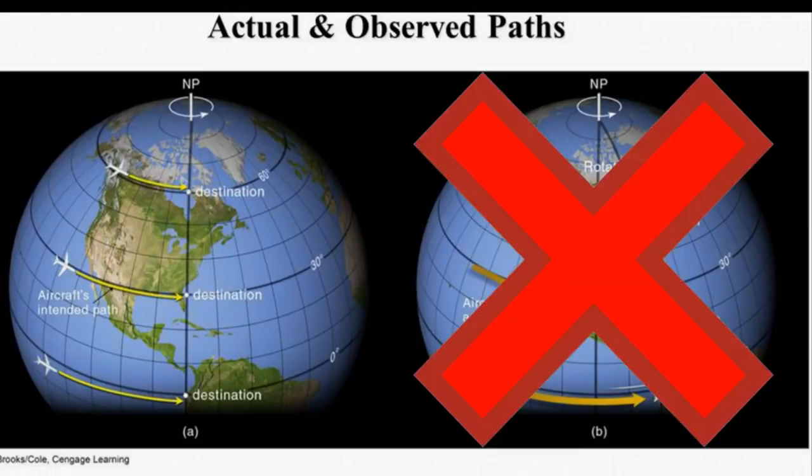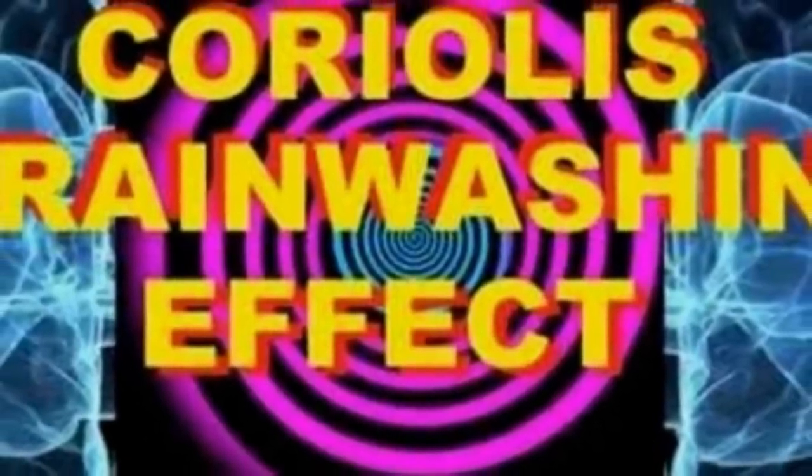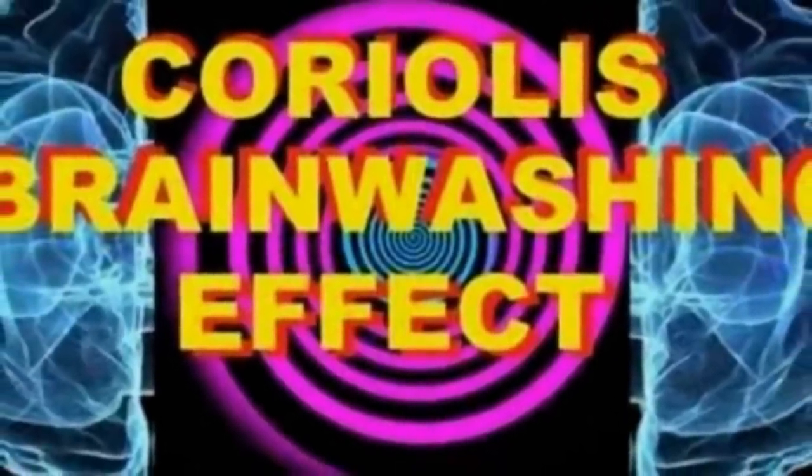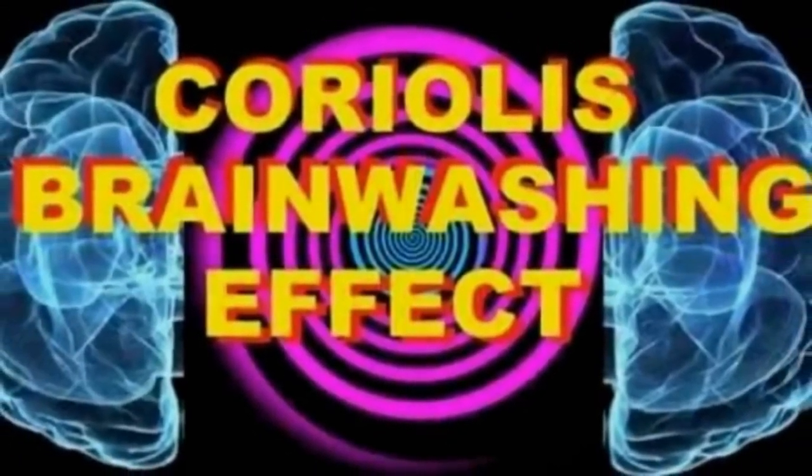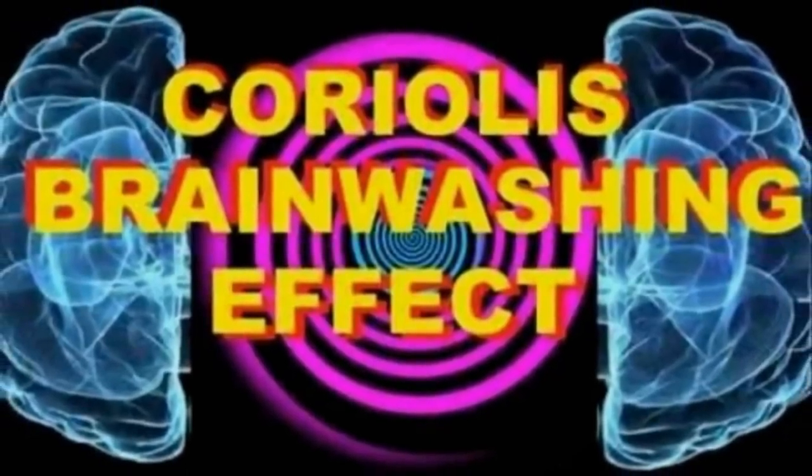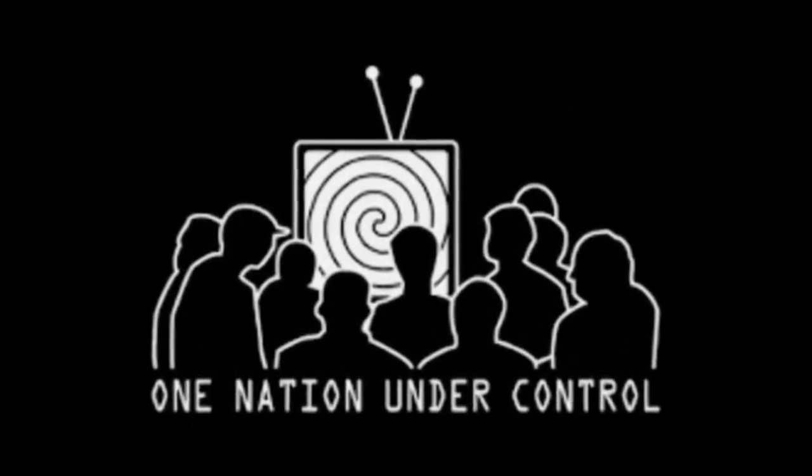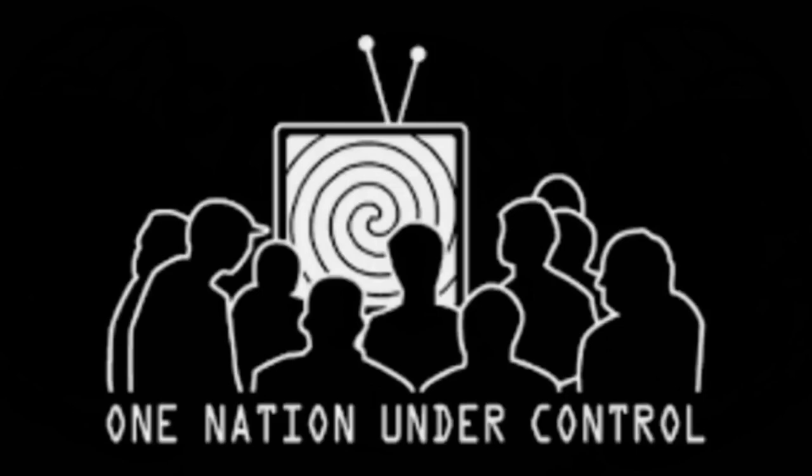The National Geographic alleges that, quote, military aircraft and missile control technology must calculate the Coriolis effect, close quote. The National Geographic cites to no authority for its statement for the simple reason that no authority exists. No authority exists because it is not true. The National Geographic is simply making things up to fool the gullible public into believing that the Earth is spinning at an incredible speed.